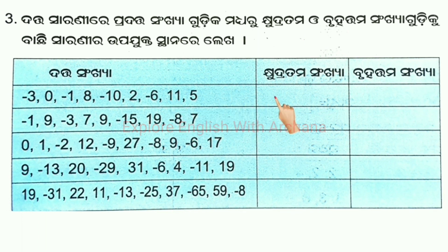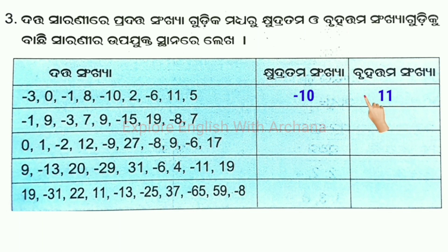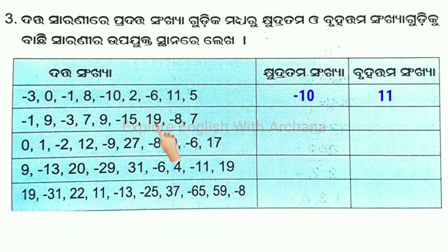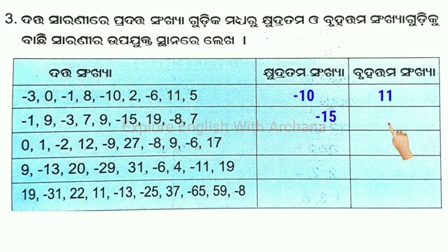We have minus 10, and we have minus 10 and we have minus 11. Next: minus 1, 9, minus 3, 7, 9, minus 15, 19, minus 8, 7. Then we have minus 15 and 19.